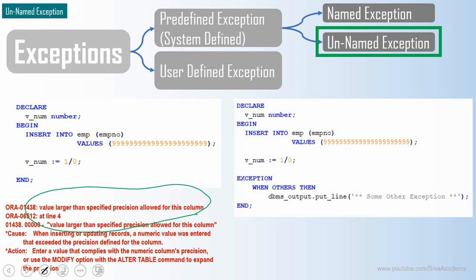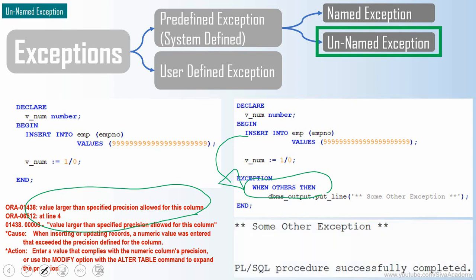Since this exception doesn't have a name, we cannot handle it with a named exception. So we go ahead with the default OTHERS class. Whenever this INSERT fails, control automatically goes to the exception handler, and since I am using WHEN OTHERS, it will come there, and the program will get gracefully terminated.